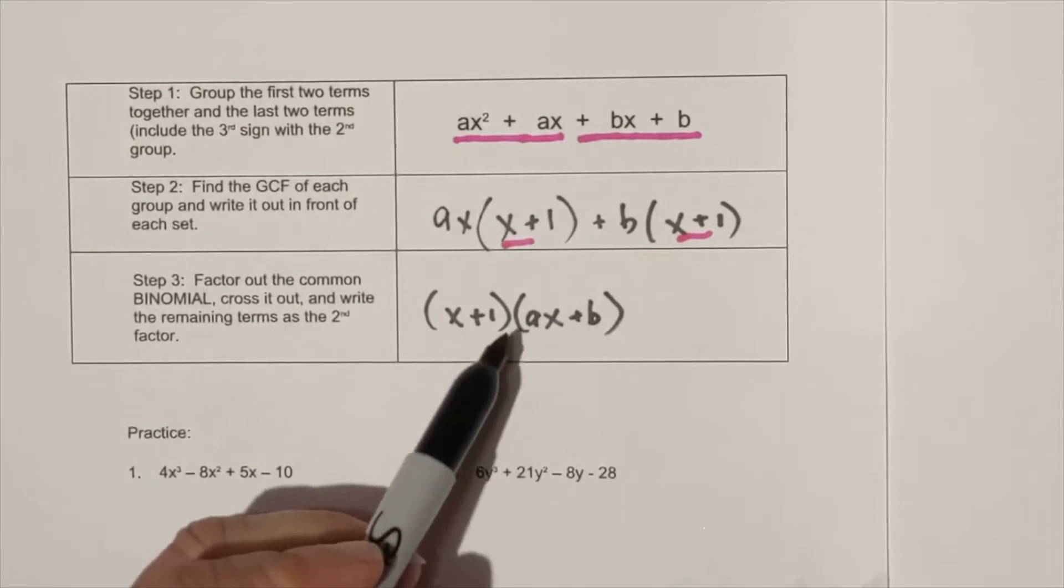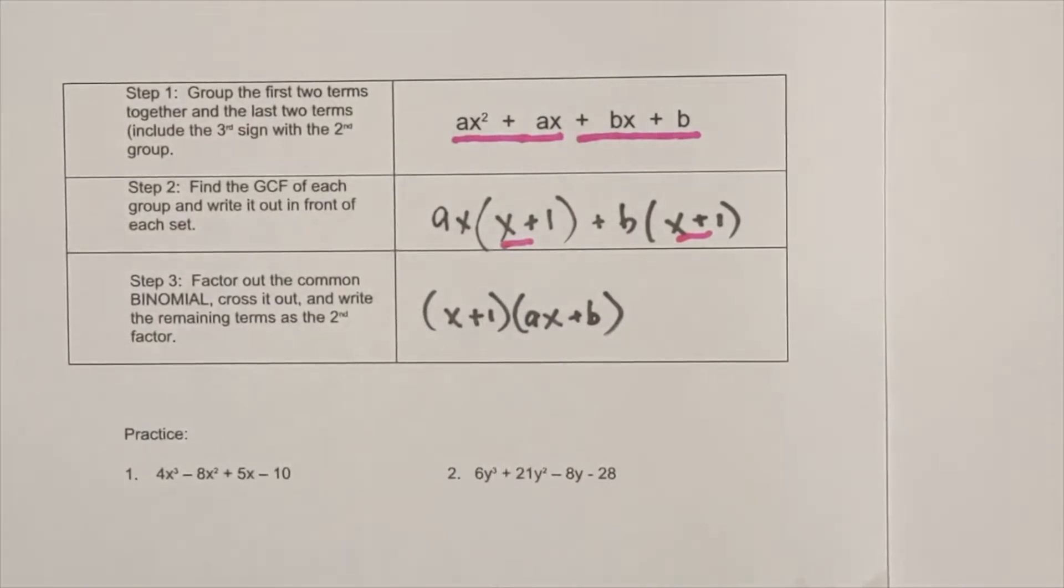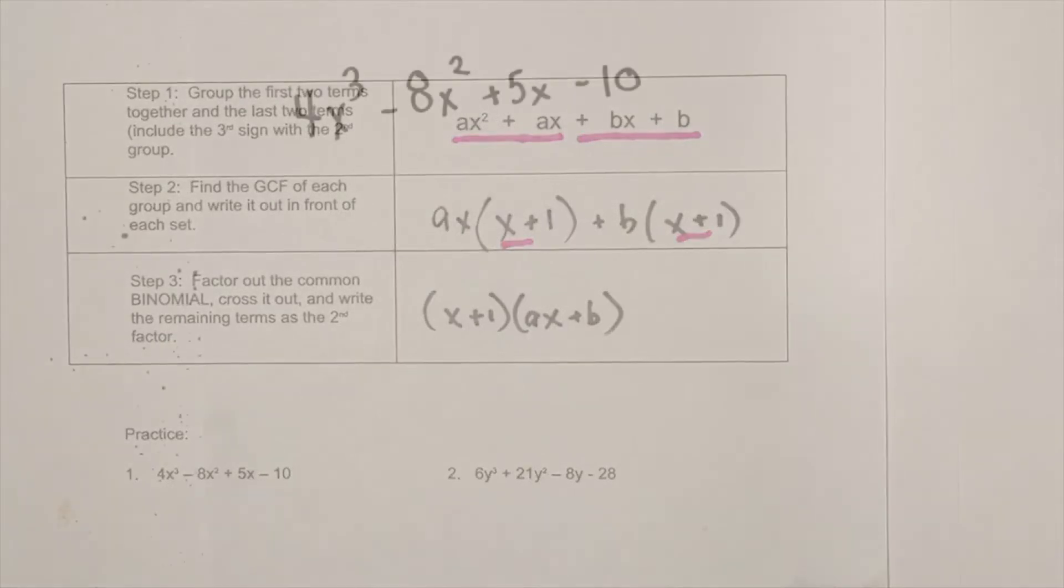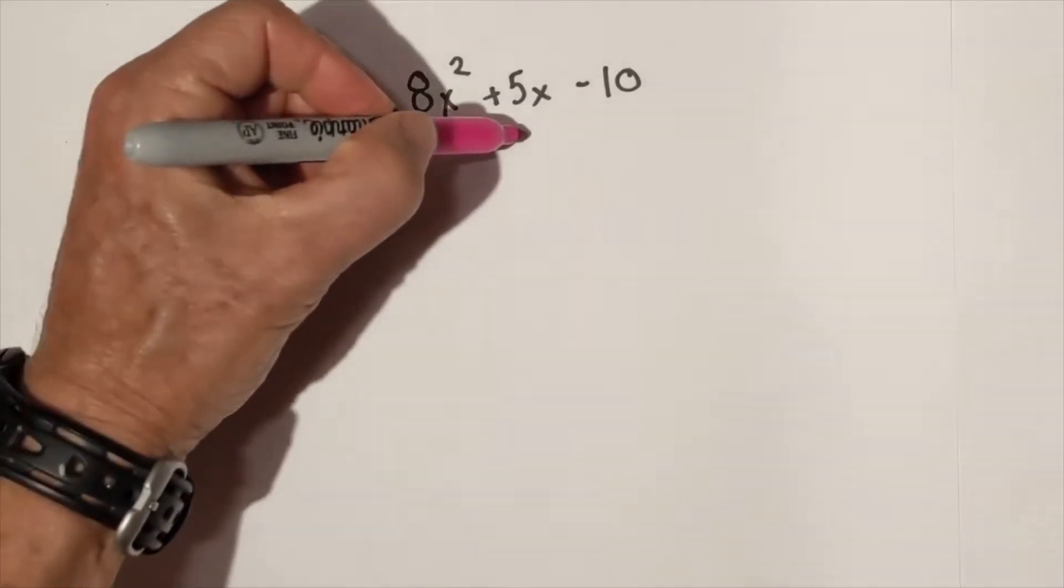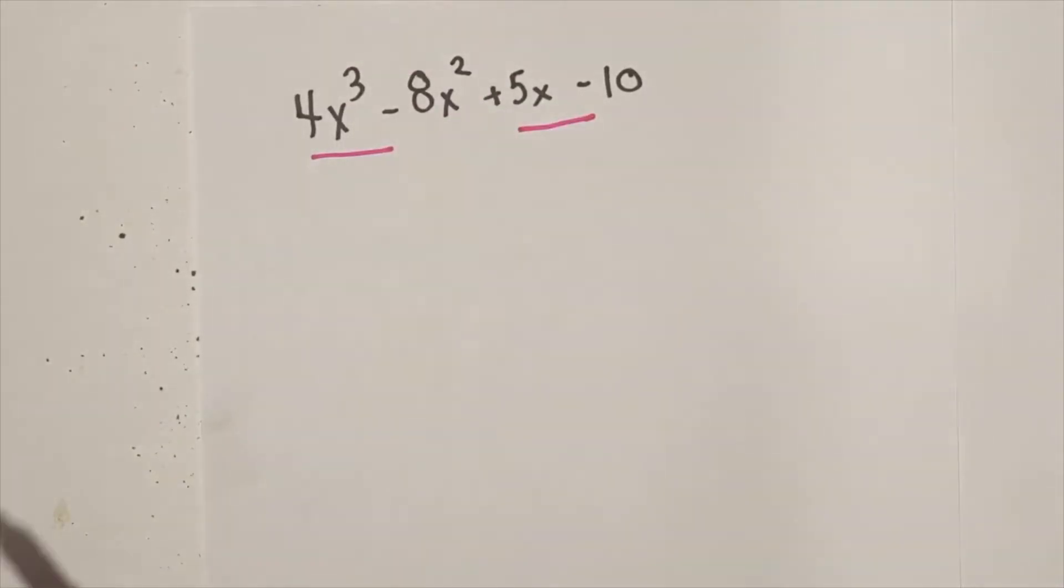So that's how you would factor out by grouping the first one. Now let's work on another example. The first thing we're going to do is do groupings, and remember the sign goes with the third item.